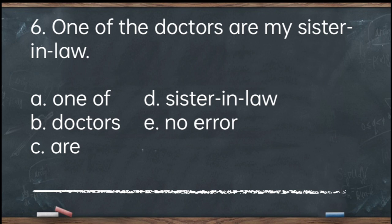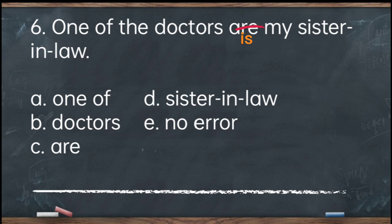The answer is letter C — 'are.' When we say 'one of the doctors' or 'one of the many,' it talks about only one. So the verb should be singular: 'is,' not 'are.' Do not use a plural verb for a singular subject. Corrected: One of the doctors is my sister-in-law.